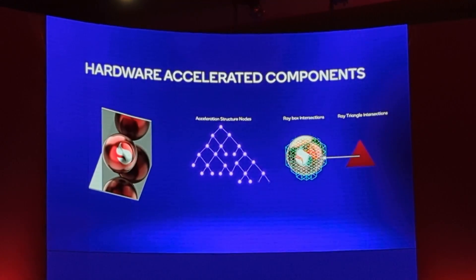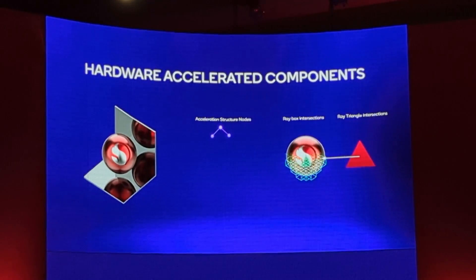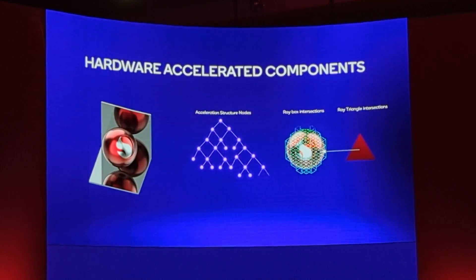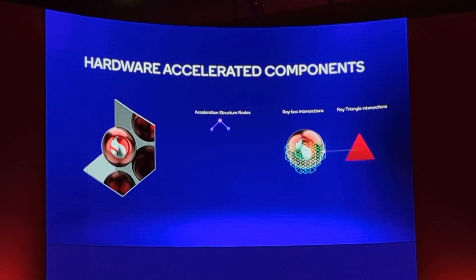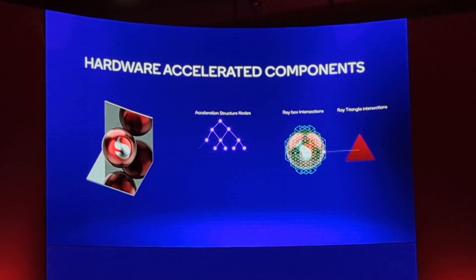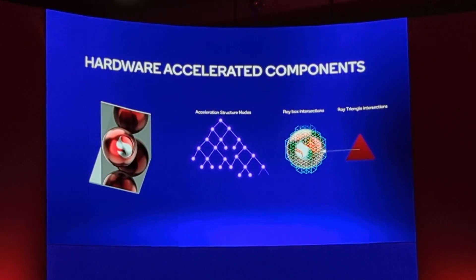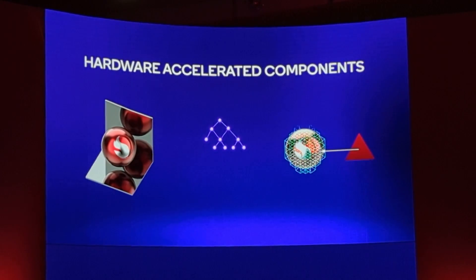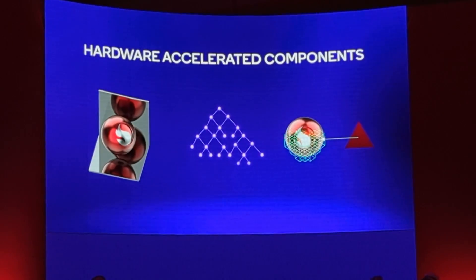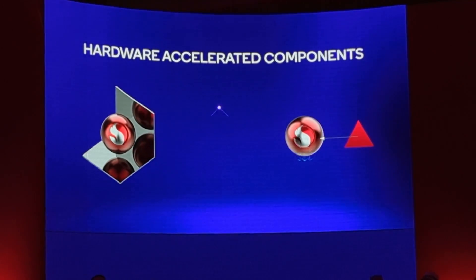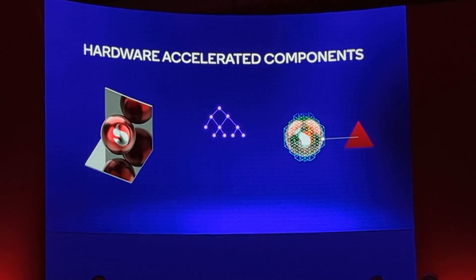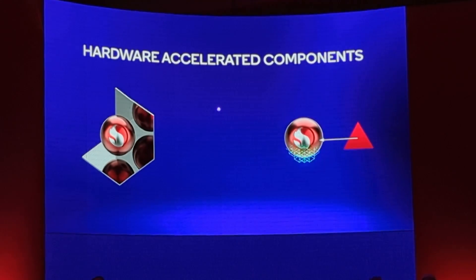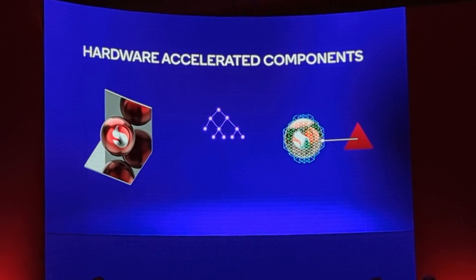There are three key components that our Adreno GPU hardware accelerates. First, the retrieval and decompression of ray tracing acceleration structures. Second, the intersection of rays with the bounding boxes that those acceleration structures are composed of. And lastly, the intersection of rays with triangles, which are the fundamental building block of everything that you see in games today.